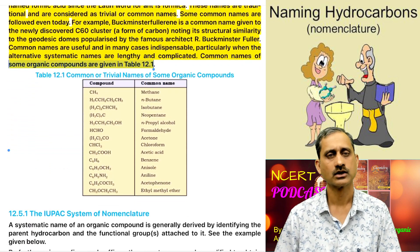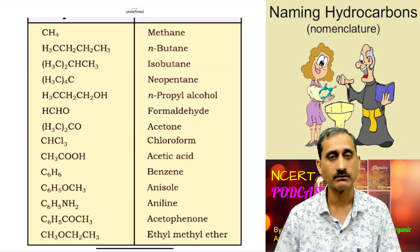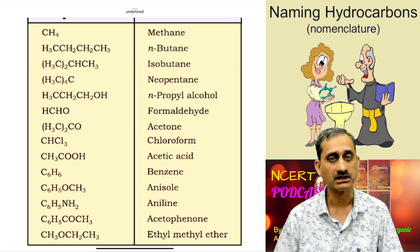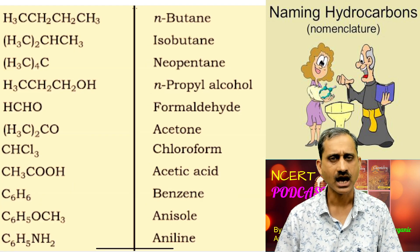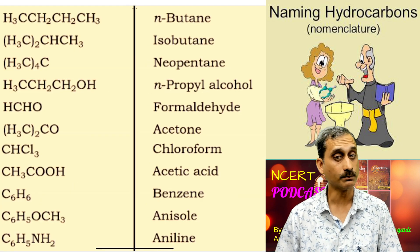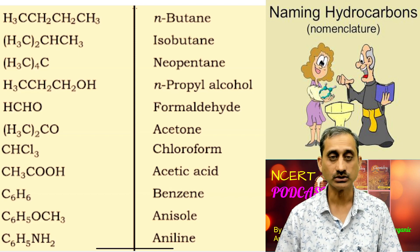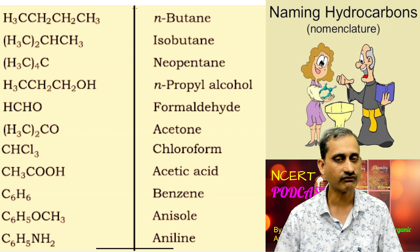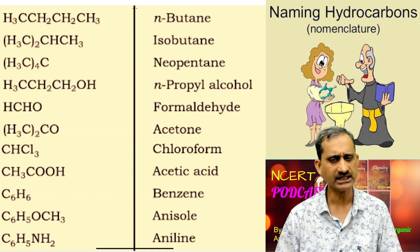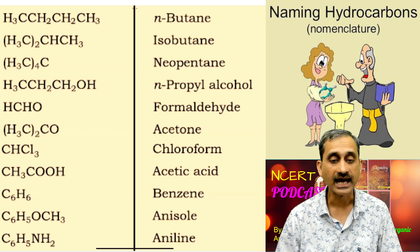Common or trivial names of some organic compounds include: methane, n-butane, isobutane, neopentane, n-propyl alcohol, formaldehyde, acetone, chloroform, acetic acid, benzene, anisole, and aniline.